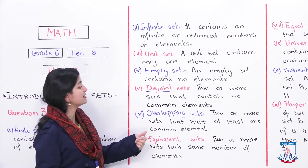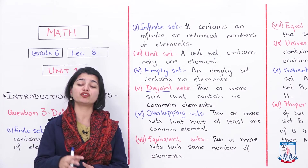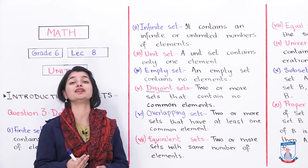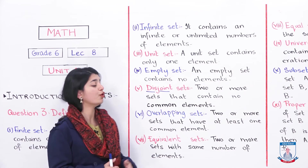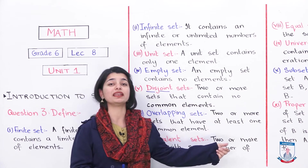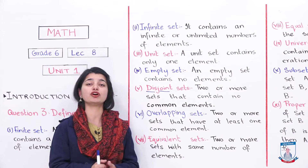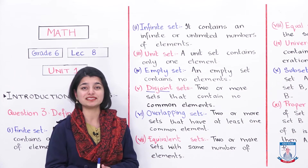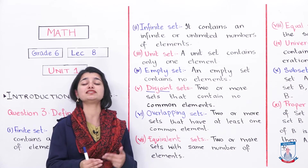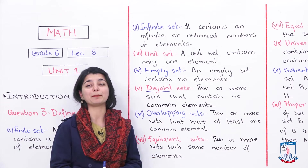Now we are studying overlapping sets. Overlapping sets are two or more sets that have at least one common element. So if two or more sets share at least one common element, we call them overlapping sets.